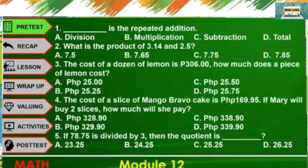The correct answer is B. Multiplication. Number 2: What is the product of 3 and 14 hundredths and 2 and 5 tenths? A. 7 and 5 tenths, B. 7 and 65 hundredths, C. 7 and 75 hundredths, D. 7 and 85 hundredths.